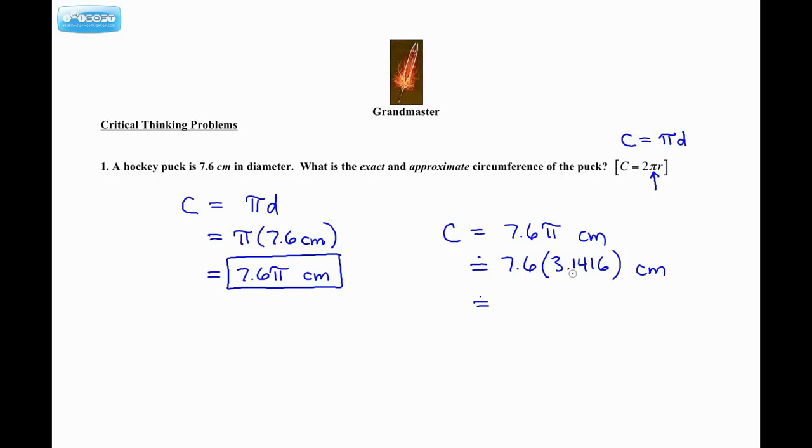Okay. And it doesn't say to how many decimal places, so I'm going to go to the nearest hundredth. Why not? So this is 23.88 centimeters. Okay. So that is the approximate circumference to the nearest hundredth of a centimeter. These are the same, exact and approximate.